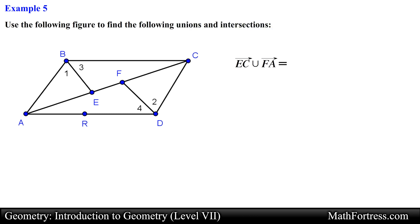Let's first identify ray EC. Recall that we can think of this ray as being formed by a set of points which are represented as follows. In the same manner ray FA is represented by the following set of points. Since we are looking for the union we need to locate all the points on ray EC or ray FA or in both. We see that this new set forms line AC or line CA.